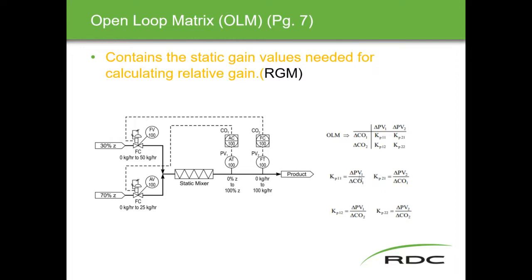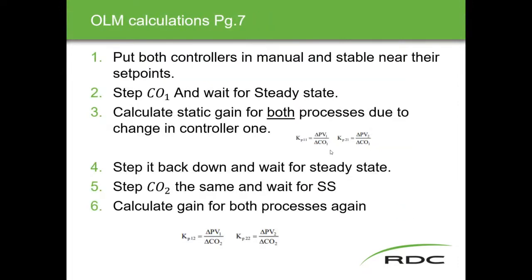When I first read this I just looked at these and went 'oh my god, this is crazy stuff' — but it's really quite simple. Here's how we get the open loop matrix. The process from page seven: put both process controllers in manual and stable near their set point. Then step the first controller, wait for steady state, and calculate the static gain for both processes as a result of the change in controller one.